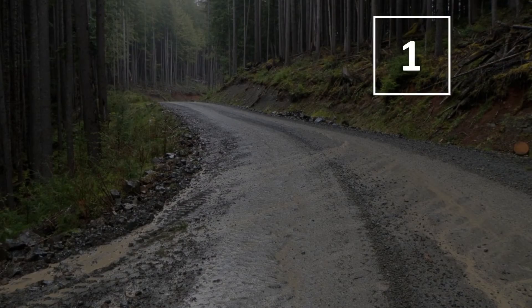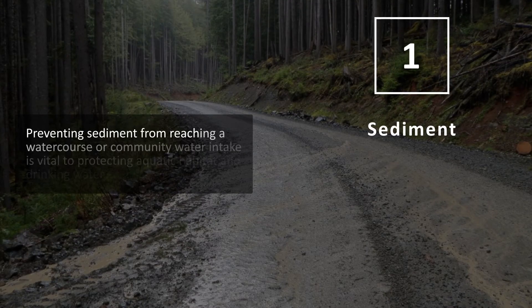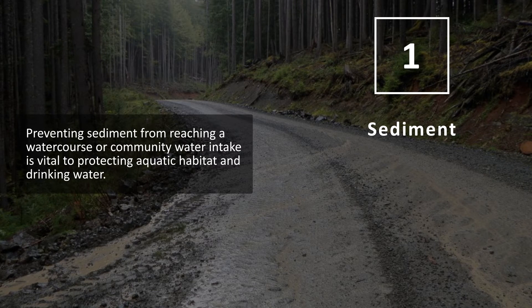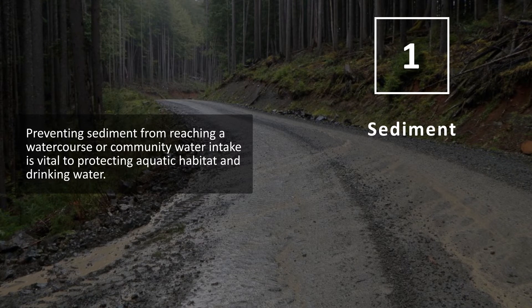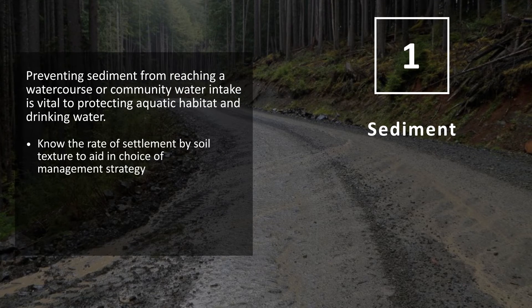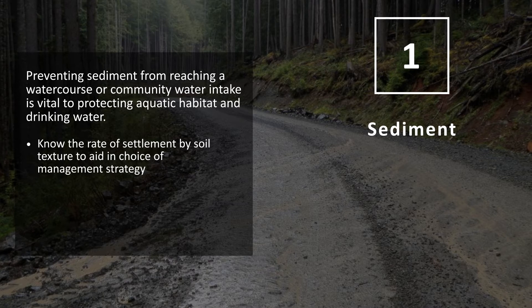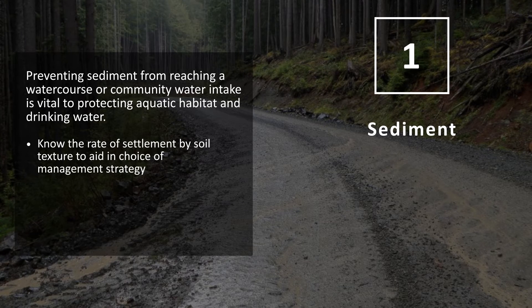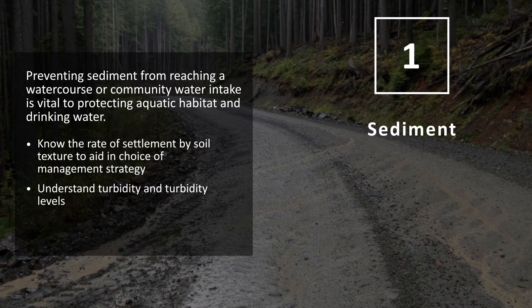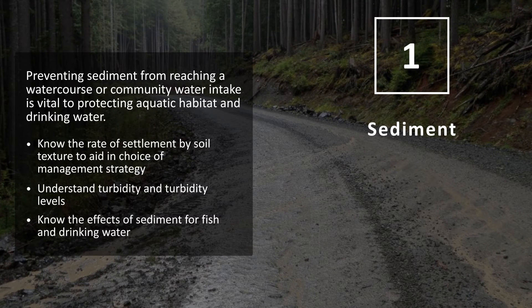Section 1: Sediment. Preventing sediment from reaching a watercourse or community water intake is vital to protecting aquatic habitat and drinking water. It's important to know the rate of settlement by soil texture to aid in choice of management strategy, to understand turbidity and turbidity levels, and to know the effect of sediment on fish and drinking water.